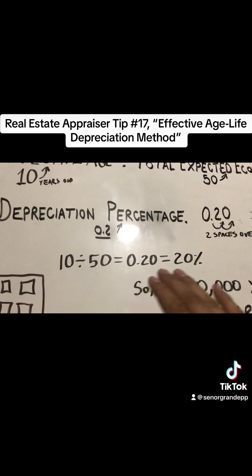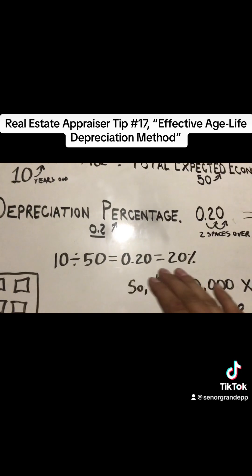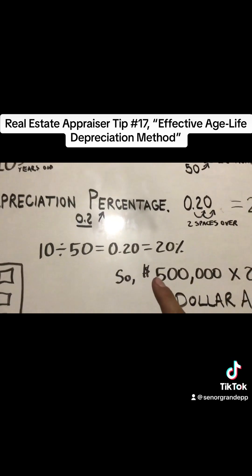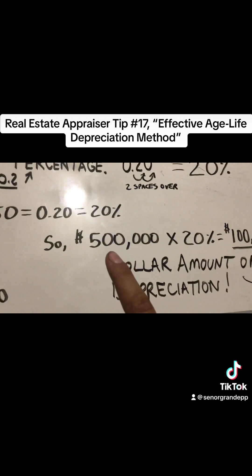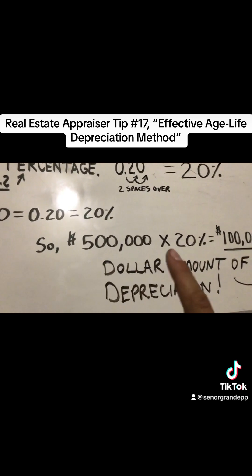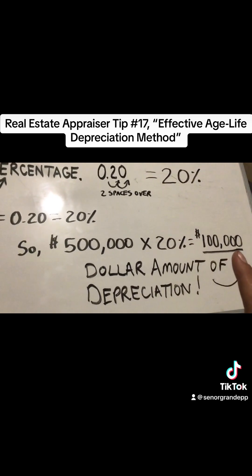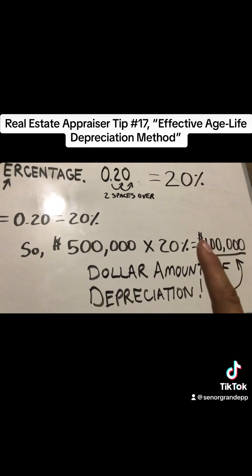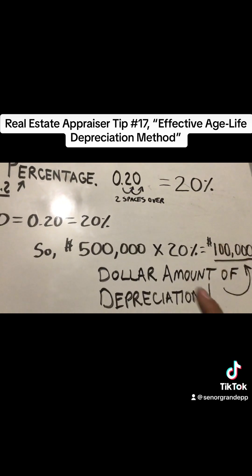Now I'm going to show you it on the actual formula. You're going to take the total value, which was $500,000, and multiply it by that 20 percent we came up with. That gives you $100,000. This $100,000 is the dollar amount of depreciation — this is the end of your formula.